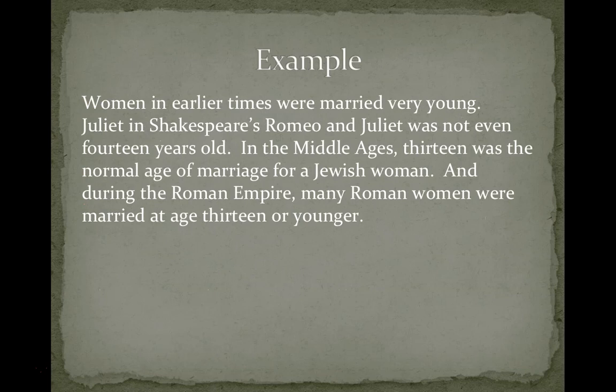So let's look at an example. Women in earlier times were married very young. Juliet, in Shakespeare's Romeo and Juliet, was not even 14 years old. In the Middle Ages, 13 was the normal age of marriage for a Jewish woman. And during the Roman Empire, many Roman women were married at age 13 or younger.